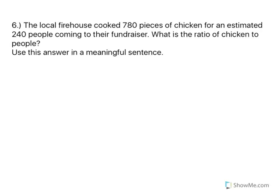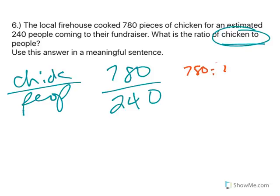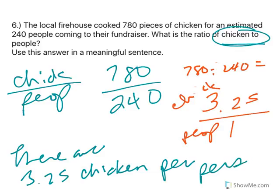A couple more questions here. The local firehouse cooked 780 pieces of chicken for an estimated 240 people coming to the fundraiser. What is the ratio of chicken to people? Be specific. Chicken comes first. That means chicken's on top, people are on the bottom. Well, there was 780 pieces of chicken, 240 people. If I just say 780 to 240, that doesn't mean anything. That's not a good ratio. So if I go ahead and divide 780 divided by 240, it gives me an answer of 3.25. I can make that a fraction by putting it over one. Chicken is still on the top, people are still on the bottom. That means there are 3.25 pieces of chicken per person. So every person for this fundraiser can have 3.25 pieces of chicken. That's what it boils down to. That's a whole lot easier to kind of understand.